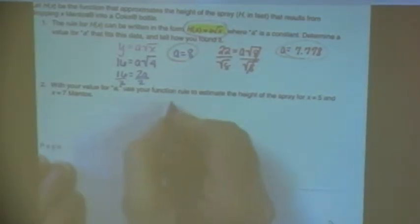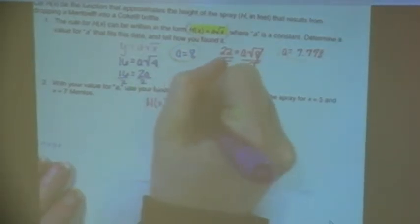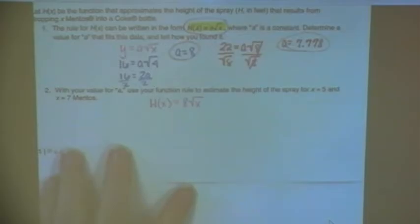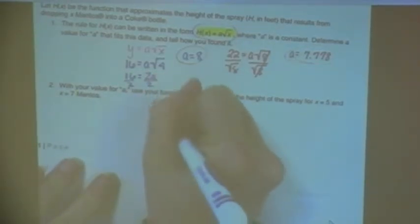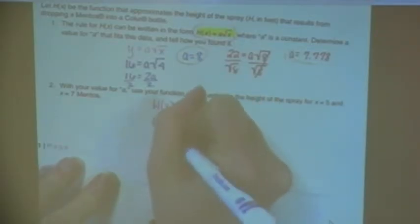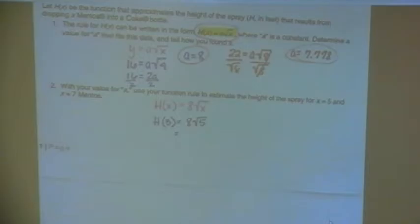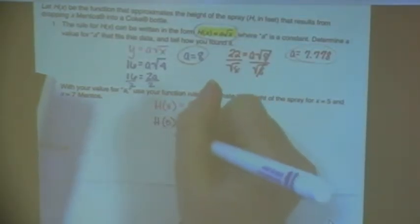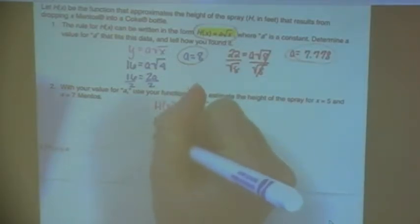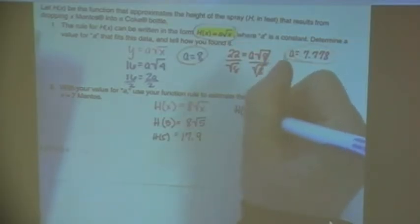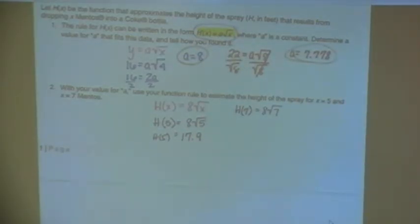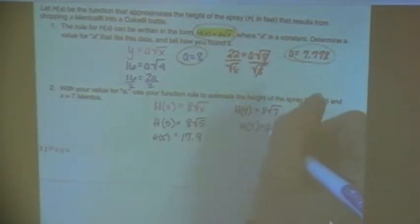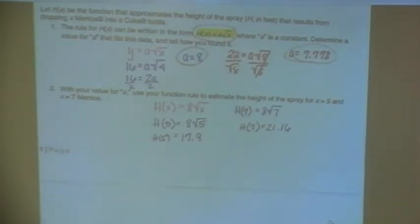All right, so it says with your value of a, use your function rule. So now I'm going to do h of x equals eight square root x. That is my function for the Mentos situation. They want me to estimate the height of the spray if x is five. So they want me to find h where x is five, which would be eight times the square root of five. So I get seventeen point nine would be the height if we used five Mentos. And they also want me to find it for seven. So h of seven would be eight times the square root of seven. You get twenty-one point one six.